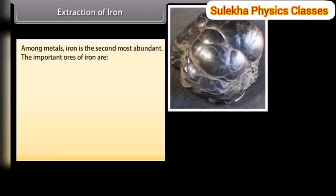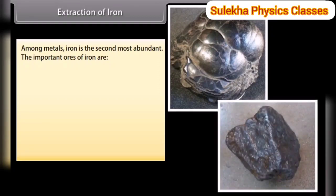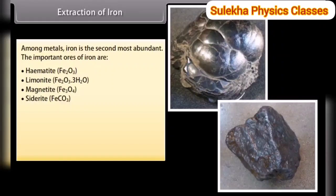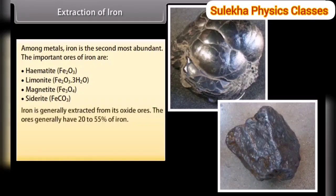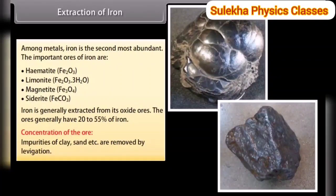Extraction of iron. Among metals, iron is the second most abundant. The important ores of iron are hematite (red iron ore), limonite (brown ore of iron), magnetite and siderite. Iron is generally extracted from its oxide ores, which generally have 20–55% iron. Concentration of the ore: impurities of clay, sand, etc. are removed by lavigation.